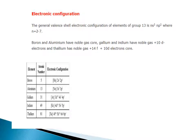The specific electronic configurations are: boron [noble gas] 2s² 2p¹; aluminium [noble gas] 3s² 3p¹; gallium [noble gas] 3d¹⁰ 4s² 4p¹; indium [noble gas] 4d¹⁰ 5s² 5p¹; and thallium [noble gas] 4f¹⁴ 5d¹⁰ 6s² 6p¹.